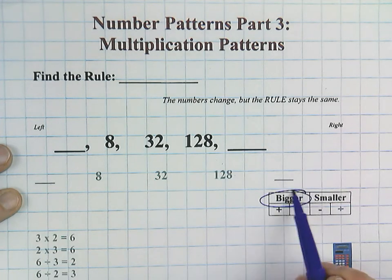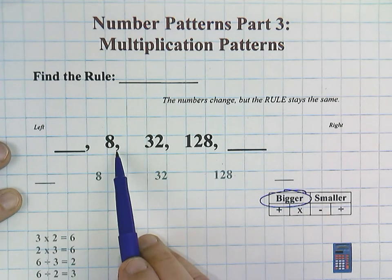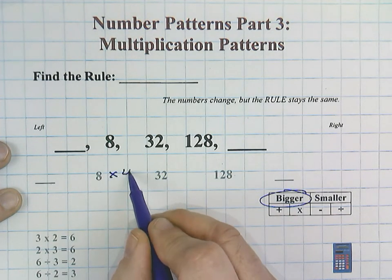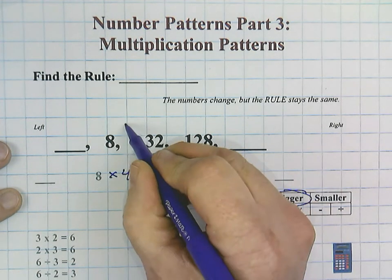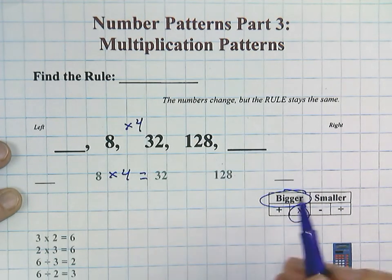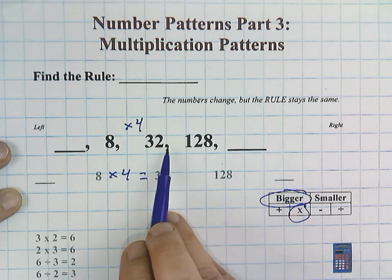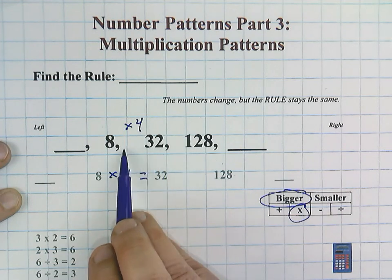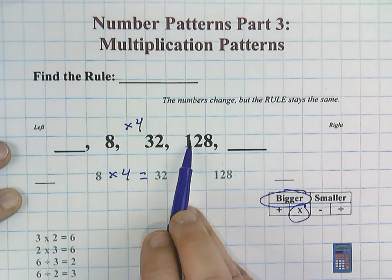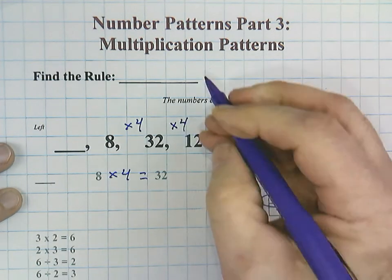Numbers are definitely getting bigger. And I know just from experience when I start with 8, that 8 times 4. So this is a multiplication rule. It could be addition. But once again, I see that if I'm adding, the difference between here is roughly 24. And it's way different. So this is a times 4 rule for sure.